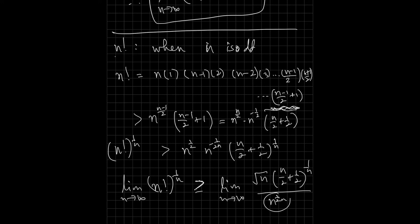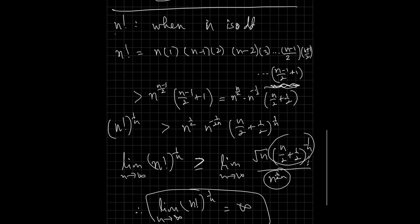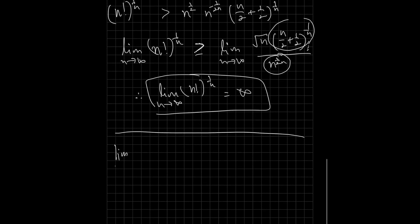Notice that this limit cannot be less than 1, and in fact if you take the limits of those expressions as n approaches infinity, those limits will be 1. Now we are ready to write down our final limit. We have the limit as n approaches infinity of 1 over n factorial raised to the 1 over n. We saw that the denominator's limit is infinity, and therefore the limit of this whole expression is 0.